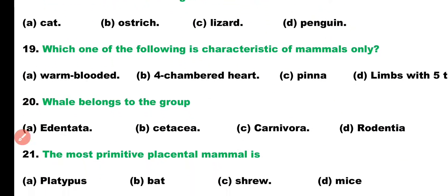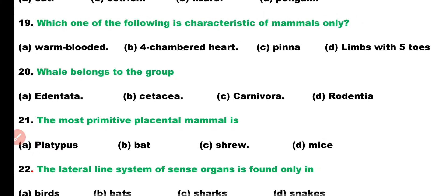Question number 19. Which of the following is the characteristic of mammals only? Warm-blooded, four-chambered heart, pinna, or limbs with five toes? Correct answer is Option C. External pinna is the characteristic feature of mammals only.